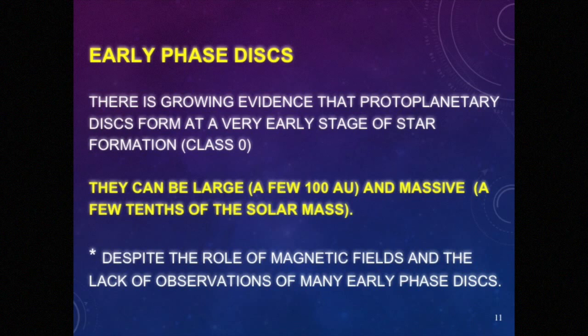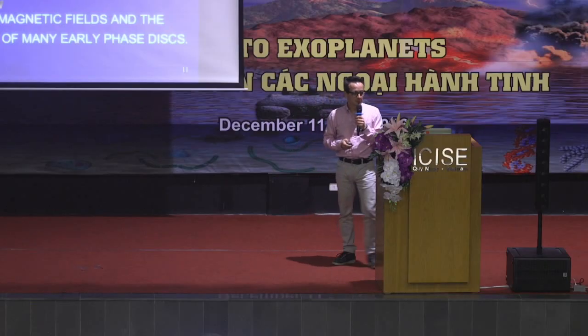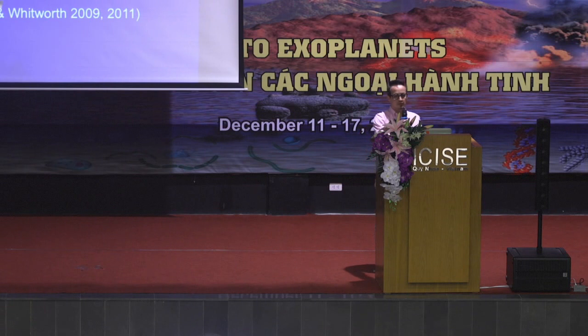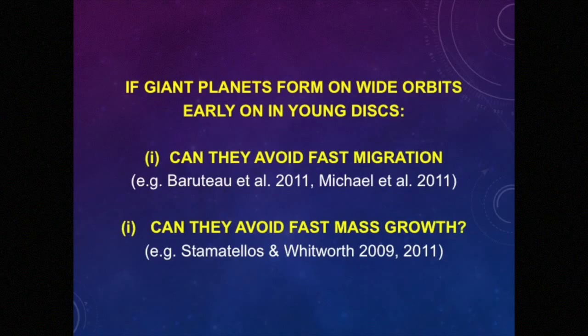What I will discuss now is what will happen if a planet forms at a very early stage in these disks. There are two problems I will talk about. First, whether a planet that forms in this disk can avoid fast migration — there are planet-disk interactions that make the planet move inwards closer to the star. And secondly, whether this protoplanet can avoid fast mass growth. Imagine this planet forms in a very gas-rich environment, so it can accrete a lot of material from the disk.